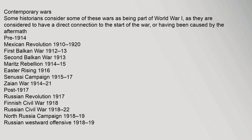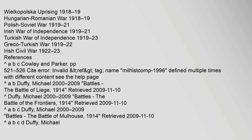Contemporary Wars: Some historians consider some of these wars as being part of World War I, as they are considered to have a direct connection to the start of the war or having been caused by its aftermath. Pre-1914: Mexican Revolution 1910–1920; First Balkan War 1912–13; Second Balkan War 1913. Associated conflicts: Merits Rebellion 1914–15; Easter Rising 1916; Senussi Campaign 1915–17; Zayan War 1914–21. Post-1917: Russian Revolution 1917; Finnish Civil War 1918; Russian Civil War 1918–22; North Russia Campaign 1918–19; Russian Westward Offensive 1918–19; Wielkopolska Uprising 1918–19; Hungarian-Romanian War 1918–19; Polish-Soviet War 1919–21; Irish War of Independence 1919–21; Turkish War of Independence 1919–23; Greco-Turkish War 1919–22; Irish Civil War 1922–23.